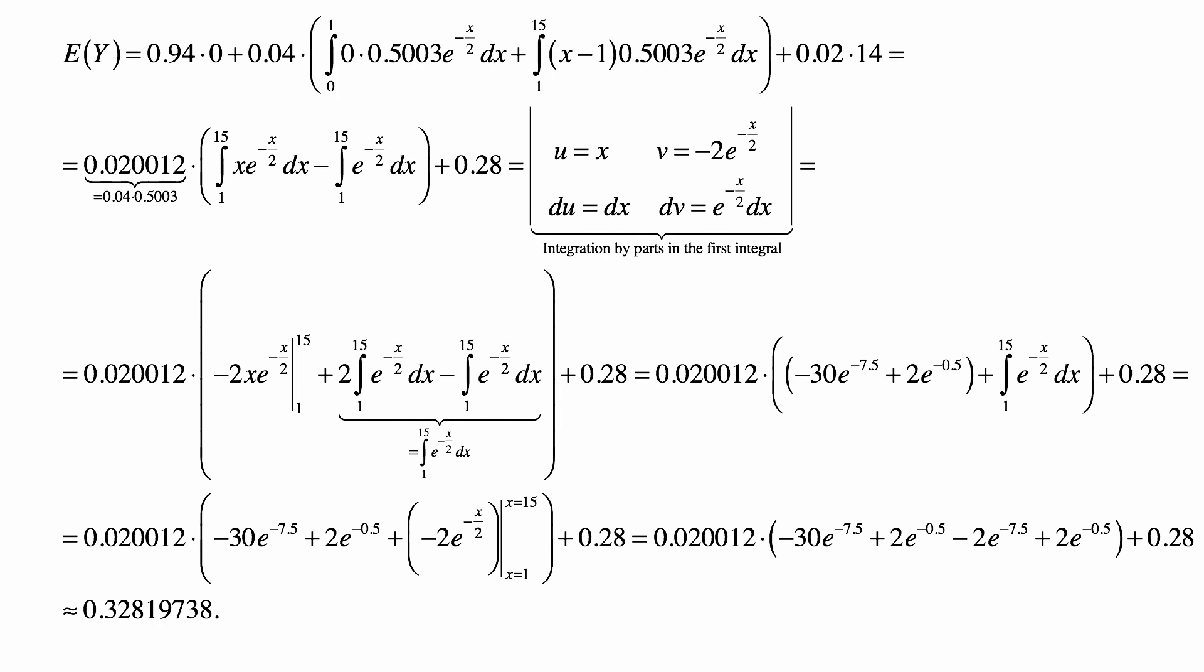And 0.04 times 0.5003, if we multiply it out, it becomes 0.020012. So, that's multiplied by an integral from 1 to 15 of X e to the minus X over 2 dX, minus the integral from 1 to 15 of e to the minus X over 2 dX. And 0.28 is 0.02 times 14.